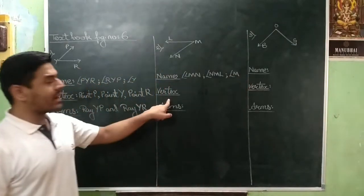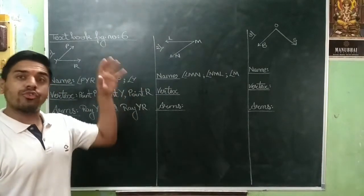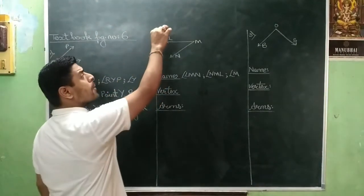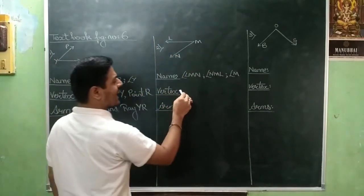Then, vertex, that is point. So which are the three points which are joined to form an angle? They are point L, point M and point N.